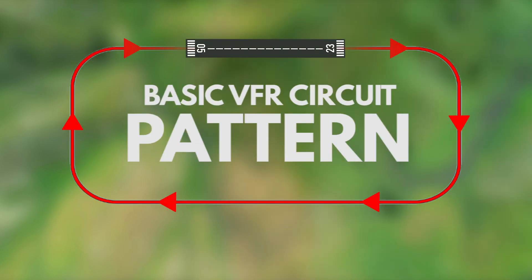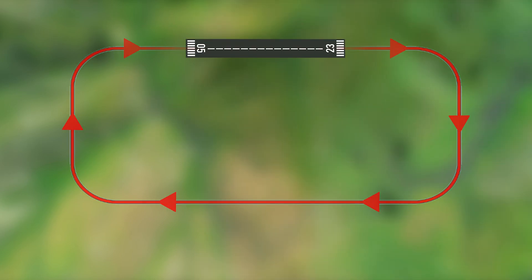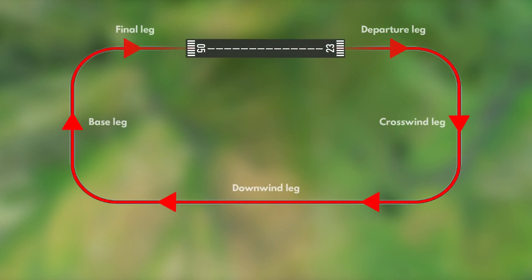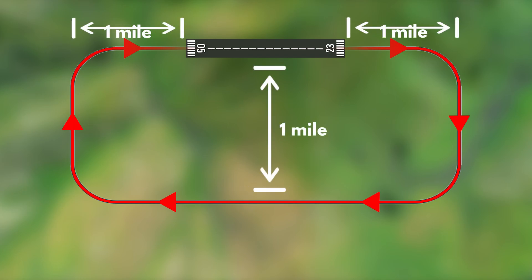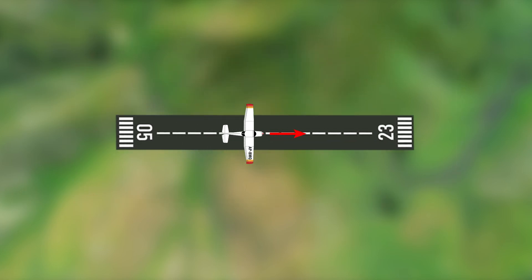This is the basic VFR circuit pattern for most airports. We have the runway right here, and then we have the circuit. This is the departure leg, the crosswind leg, the downwind leg, and the final leg. Each leg is perpendicular or 90 degrees apart from the next, and each leg is about one mile from the runway. We can see one runway, but there are actually two runways, one going here and the other going the opposite direction.